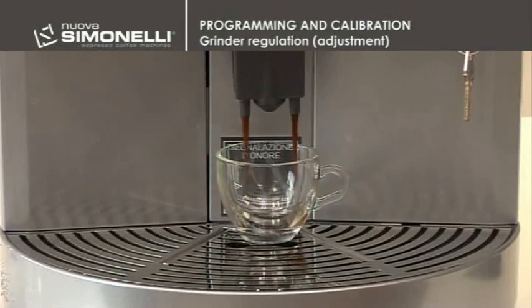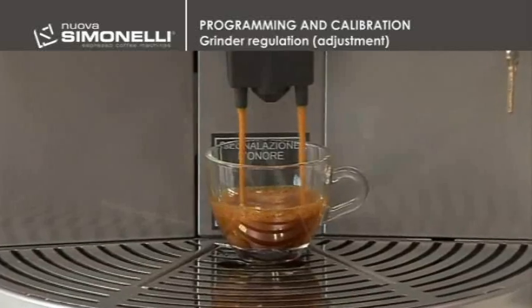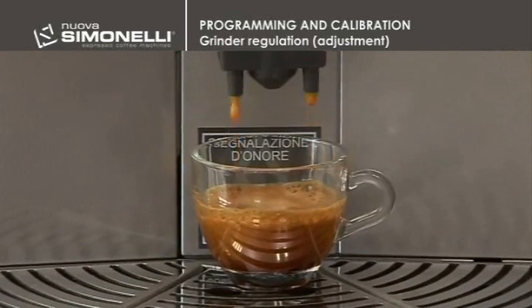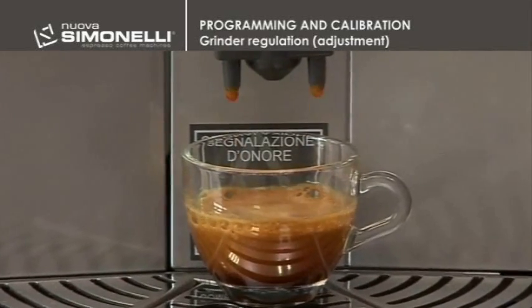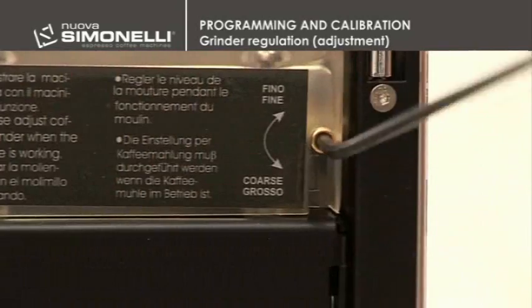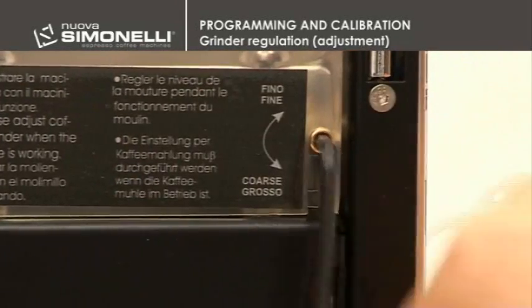If coffee is brewed too quickly, it means that the beans are being ground too coarsely. So it is necessary to adjust the grind finer by turning the screw in the clockwise direction.